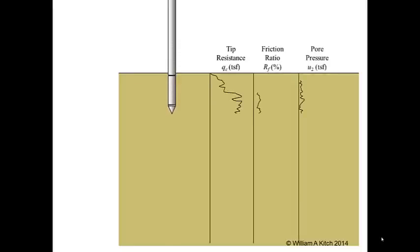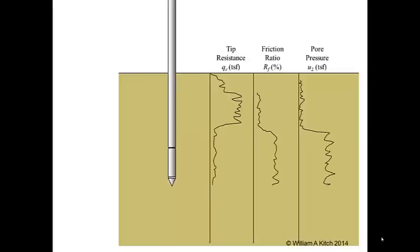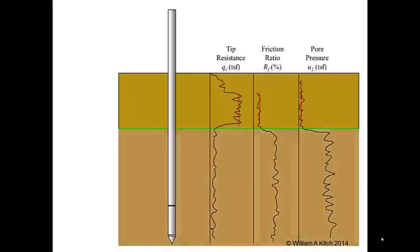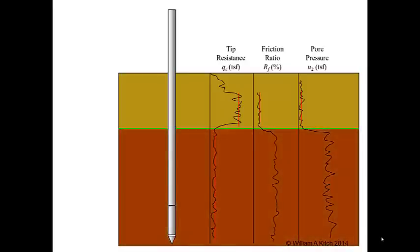The measurements we get from the piezo cone are tip resistance, friction ratio, and pore pressure. As shown in this animation, these three parameters are measured continuously as the probe is pushed into the soil. Because the CPT provides a continuous profile of measurements, it is very useful in delineating different soil layers. Note that the CPT readings above the green line are notably different from those below the line. The soil above produces a relatively high tip resistance, a low friction ratio, and a very low pore pressure. In contrast, the soil below the green line produces a relatively low tip resistance, a high friction ratio, and a high pore pressure.